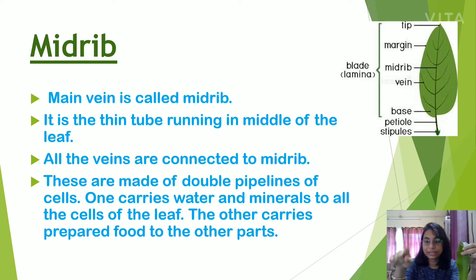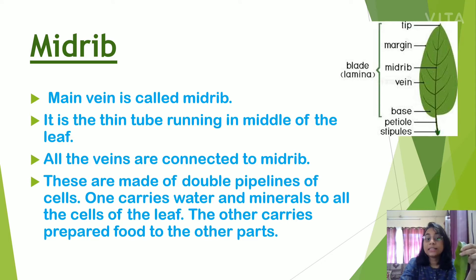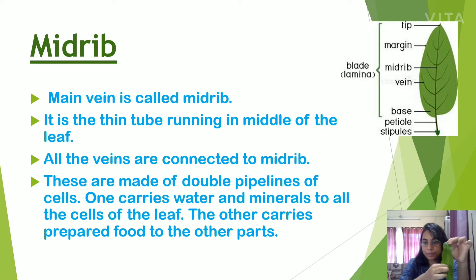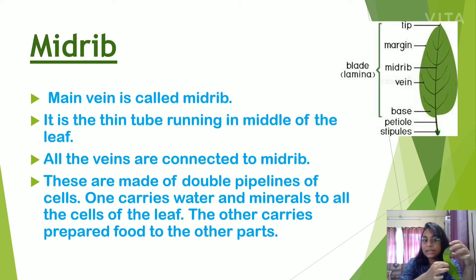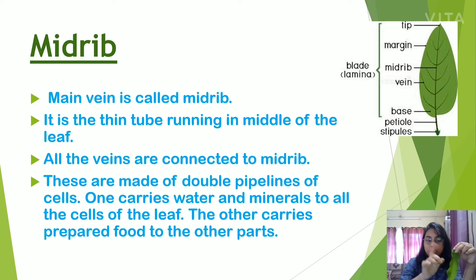In the picture you can see all the veins are connected to the main vein, which is called the midrib. The midrib is made of double pipelines of cells — it also acts like a pipe for transportation of water and minerals. One pipe carries water and minerals to the cells of the leaf, because the plant needs water and minerals for making food.